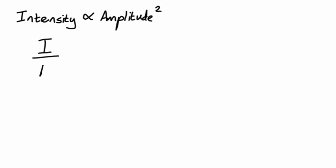Imagine dropping a stone into some water. As the wave spreads out, the amplitude of the wave decreases. Intensity is proportional to amplitude squared. Another way of writing this would be to say that intensity divided by amplitude squared equals a constant.